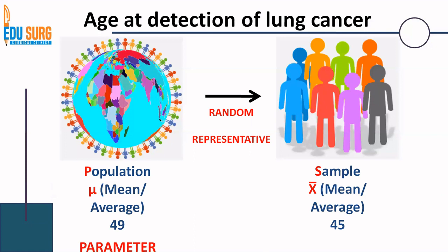The population mean, or the character mu, is known as a parameter — a population parameter. P for population. Whereas when you calculate the same thing for the sample, it is known as a statistic, because this is a statistical creation of a population parameter. Ideally, you should study the entire population to find the most common age group for detection of lung cancer — that is where you find a population parameter. But since that is very time consuming and laborious, statistics allow you to create a sample, which is why sample values are known as sample statistics. X-bar is the sample mean, whereas mu is the population mean. There are multiple parameters of a population and corresponding multiple sample statistics, which we will see in upcoming videos.